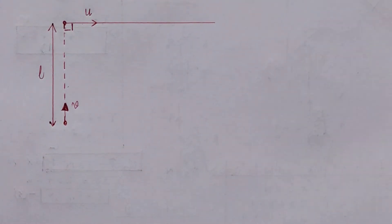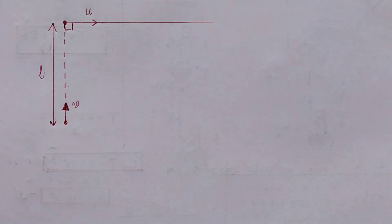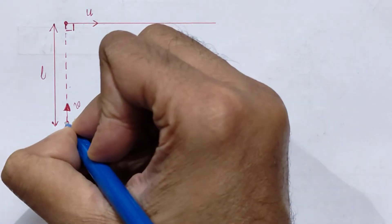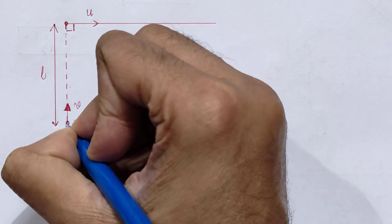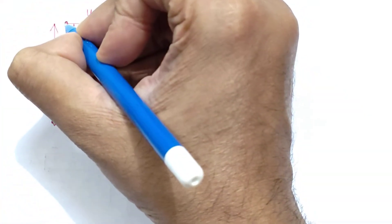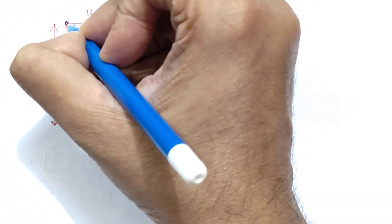Hello, my dear students, welcome to Physics is Fun. Today we have a very interesting problem — I call it the Tom and Jerry problem of physics. Basically, what is happening is that there is a dog here who finds a cat, and the cat also finds the dog.